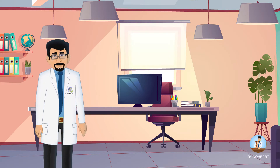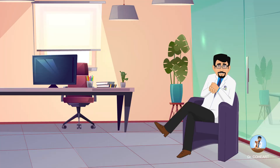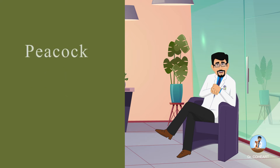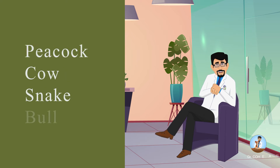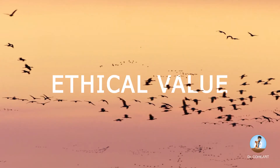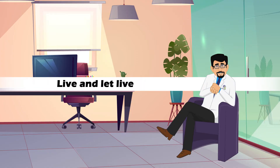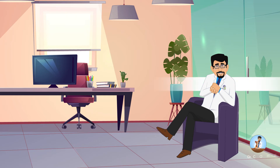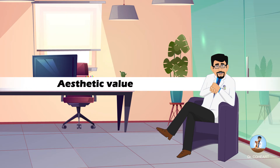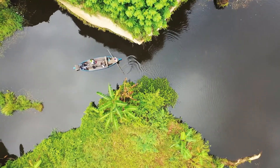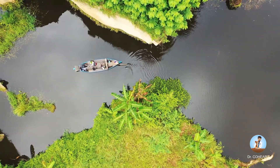Biodiversity has a social value. Many plants like tulsi, peepal, hibiscus and datura are considered to be sacred. Peacock, cow, snake and bull all have a place in our spiritual arena. Biodiversity has an ethical value, based on the concept of live and let live. Biodiversity also has an aesthetic value, providing a good deal of fun and recreation — this type of tourism is known as ecotourism.